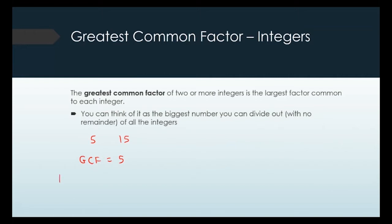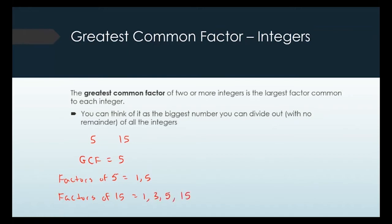You can figure out the GCF by listing all the factors and looking to see which one is in common. The factors of 5 are just 1 and 5, because 5 is prime. The factors of 15 are 1, 3, 5, and 15.